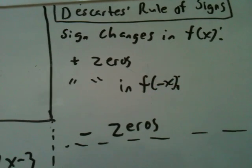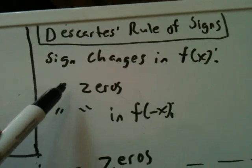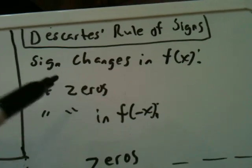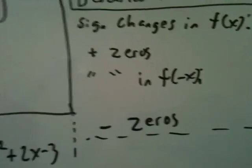For all the sign changes in the function f(x), that's the maximum number of positive zeros. You keep going down by 2 until you get to 1 or 0.